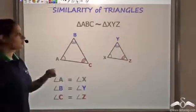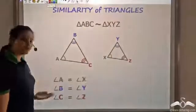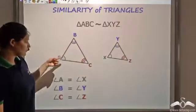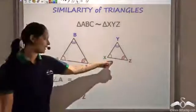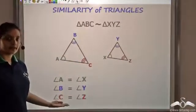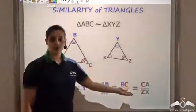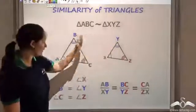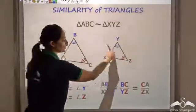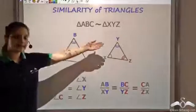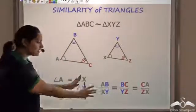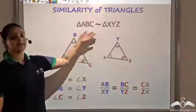Let us see when triangles are similar. Two triangles are said to be similar if all the corresponding angles are equal. So if I have triangle ABC and XYZ, angle A equals angle X, angle B equals angle Y, and angle C equals angle Z. Not just this, the corresponding sides are also proportional: AB/XY = BC/YZ = AC/XZ. Conversely, if corresponding angles are equal and corresponding sides are proportional, then the two triangles are similar.